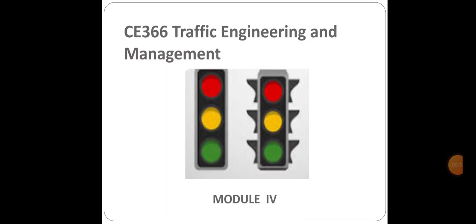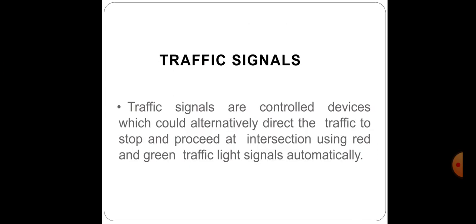Welcome everyone. Today we'll be discussing another topic from Module 4 in traffic engineering and management. In the previous class we discussed traffic signals and their various advantages and disadvantages. Traffic lights or traffic signals are signaling devices positioned at road intersections and pedestrian crossings to allow vehicles to stop and proceed. They are control devices which alternately direct traffic using red and green light signals. The main requirements are to draw attention, provide meaning and time to respond, and to have minimum waste of time.